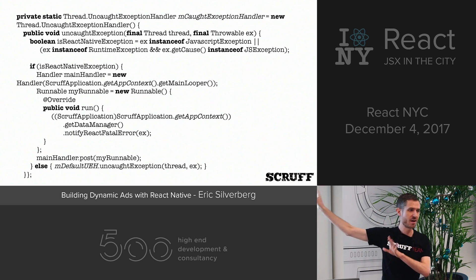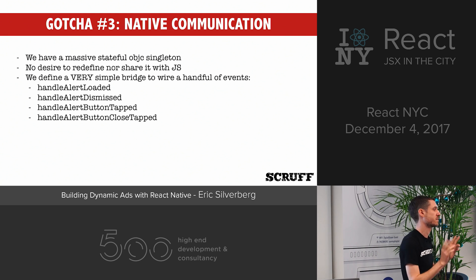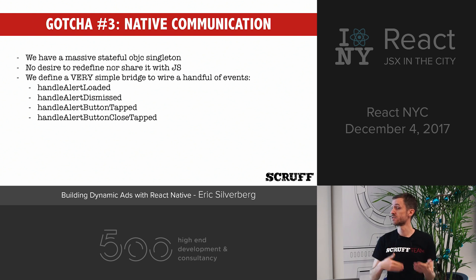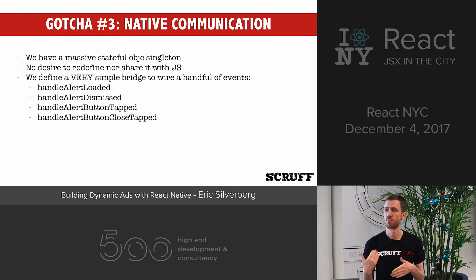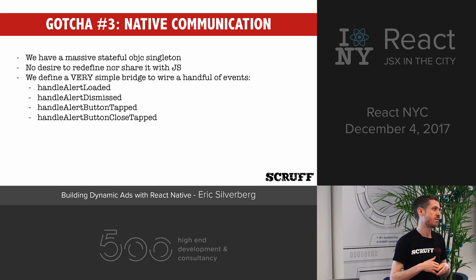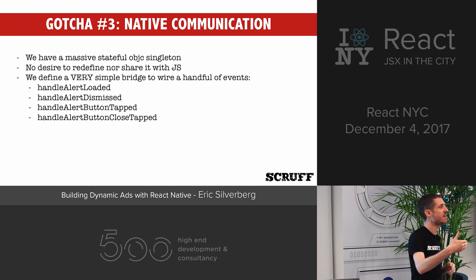The last gotcha — which is more of an architectural decision — is what does the native communication look like? We elected to make the native communication layer, that bridging layer, extremely simple. We only have four functions that are essentially being exposed. This really sped up the development time and also let us seamlessly integrate React Native into our existing alerting system, since not all of our alerts are React Native enabled.